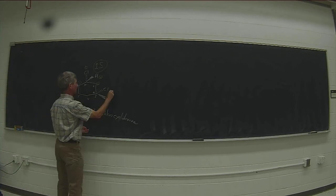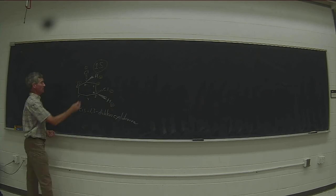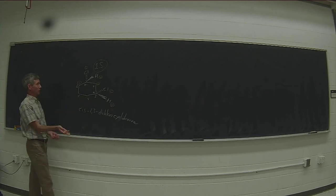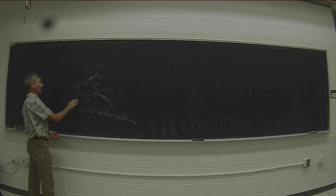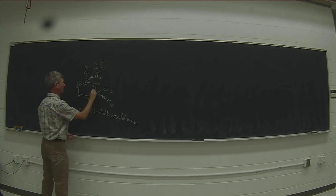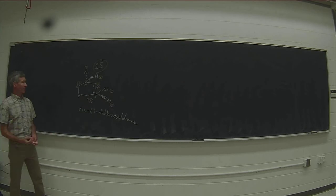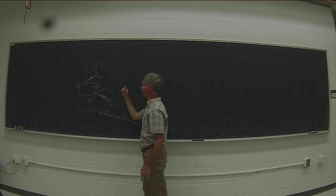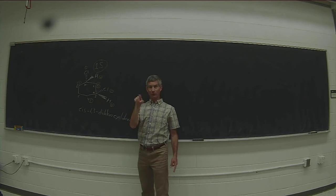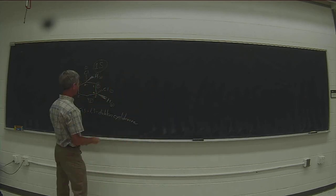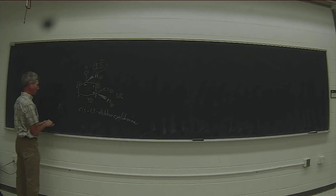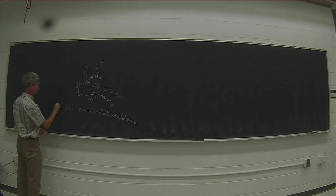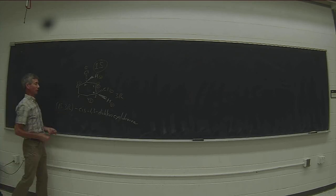At carbon 3, chlorine ranks number one and hydrogen ranks number four. Carbon 2 and carbon 4 are both CH2 groups, so no difference there yet. But carbon 1 outranks carbon 5 by virtue of being attached to chlorine, so carbon 2 outranks carbon 4. Again we're looking the wrong way down the bond, so putting ourselves behind the board, the motion is clockwise, making it the R stereocenter. This is 1S,3R-1,3-dichlorocyclohexane, or cis-1,3-dichlorocyclohexane.